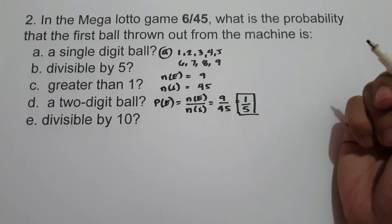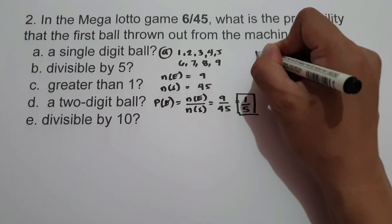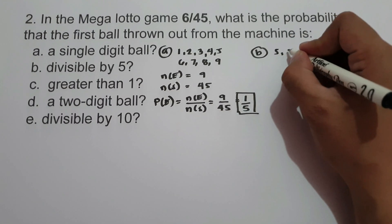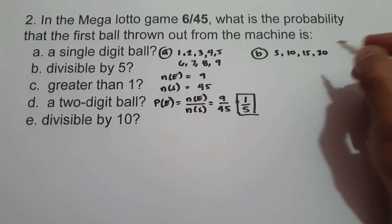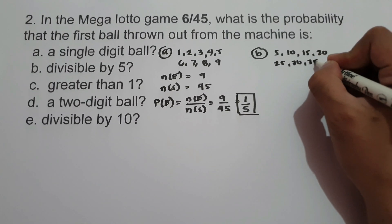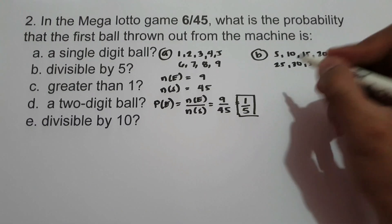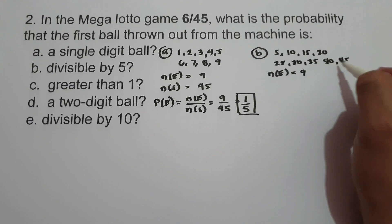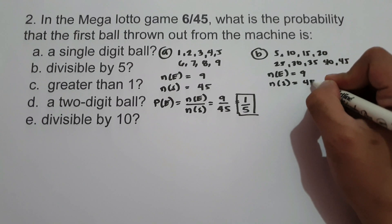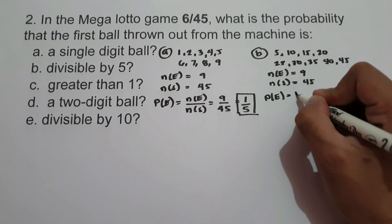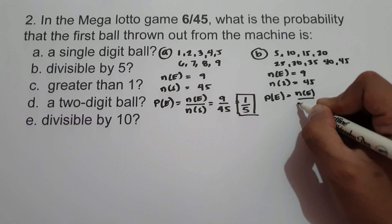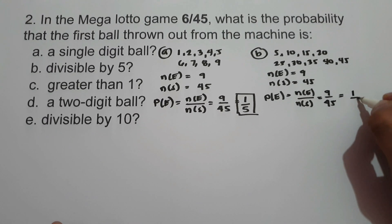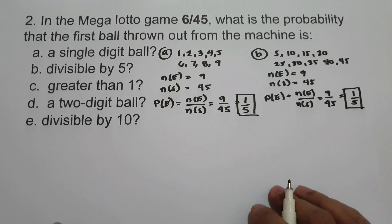On letter B, we have divisible by 5. The numbers divisible by 5 consist of 5, 10, 15, 20, 25, 30, 35, 40, and 45 — that is 9 favorable outcomes. The number of possible outcomes is 45. So the probability of an event is 9 over 45, which can be written as 1 over 5. On letter C, greater than 1 — how many numbers between 1 and 45 are greater than 1? The number of favorable outcomes is 44, and the total number of possible outcomes is 45, so the probability is 44 over 45.